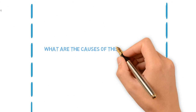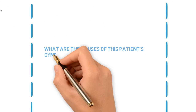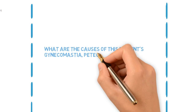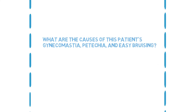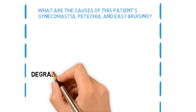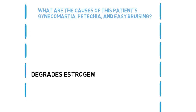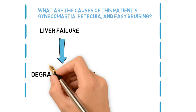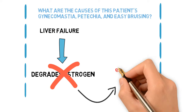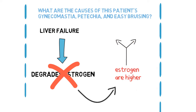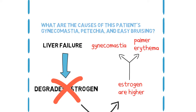What are the causes of this patient's gynecomastia, petechiae, and easy bruising? The liver normally degrades estrogen. In liver failure, circulating serum levels of estrogen are higher, causing gynecomastia and palmar erythema. Spider angiomas are also caused by elevated estrogen in cirrhotic patients.